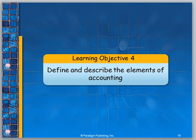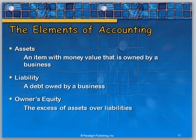Now we're going to look at the elements of accounting. The elements of accounting include assets, liabilities, and owner's equity. Assets are items with money value owned by a business. Liabilities are debts owed by a business. And owner's equity is the difference between how much is owned and how much is owed.